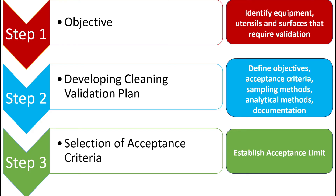Step two is to develop the cleaning validation plan, which is also called the validation protocol. The validation protocol includes defined objectives, acceptance criteria, sampling methods, analytical methods, and documentation of everything. Step three is the selection of acceptance criteria, to ensure that the cleaning process can perform whatever it proposes. For example, not more than 10 ppm of any product will appear in another product — this is an example of an acceptance criteria.